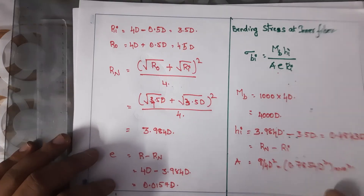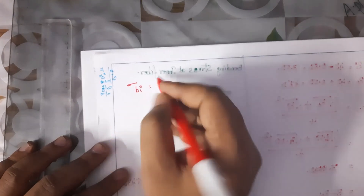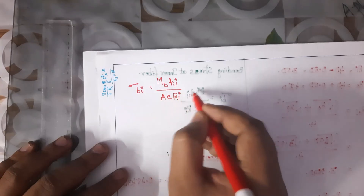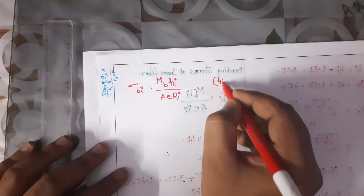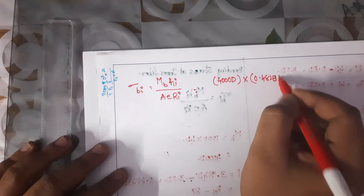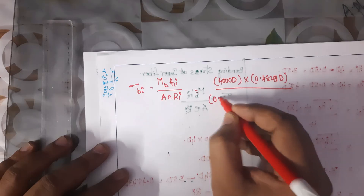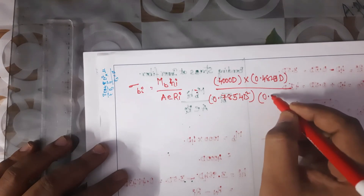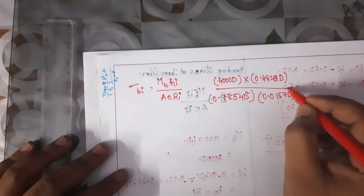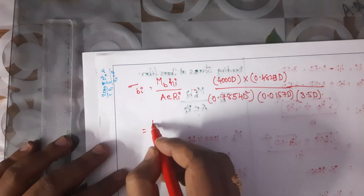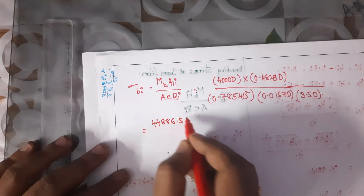Substituting all values into the bending stress formula: σbi = (4000d × 0.4843d) / (0.7854d² × 0.0157d × 3.5d). This gives σbi = 44886.51 / d².